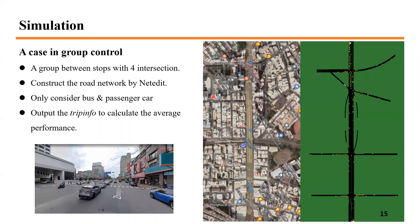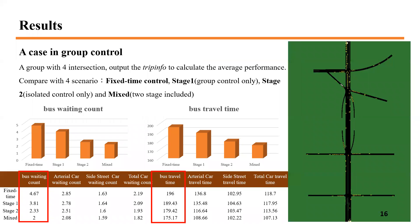Here is an example for a group with four intersections. The arterial is Zhonghua Road, which is also the bus main route. The simulation network is constructed by NetEdit, and we only consider buses and passenger cars in this case. Performance is output using trip info provided by SUMO. We collect waiting time and travel time as the two evaluation factors. Four scenarios are compared: original fixed-time control, only group control (stage one only), only isolated control (stage two only), and the mixed two-stage control.